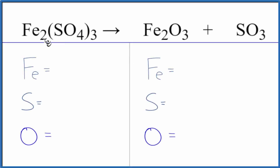In this video, we'll balance the equation for Fe2(SO4)3 decomposing. This is iron 2 sulfate, and it's a decomposition reaction because we have this one thing here breaking into two different things.